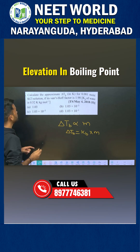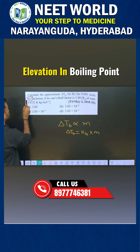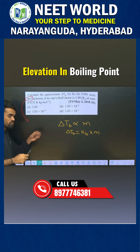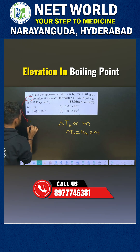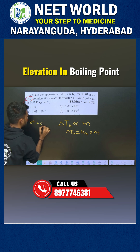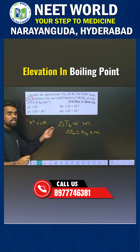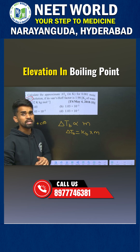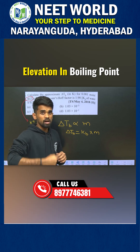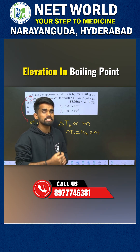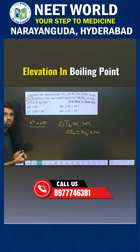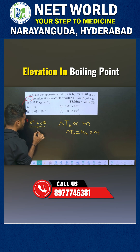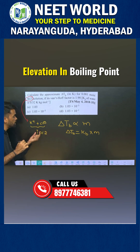KCl is given — KCl is a strong electrolyte. Whenever it is placed in aqueous medium, it dissociates into K⁺ and Cl⁻ ions. Now delta Tb, elevation in boiling point, is a colligative property, meaning it is a number-dependent property. How many particles do we have? Two particles — so the van't Hoff factor i is almost 2.